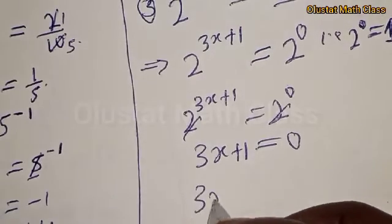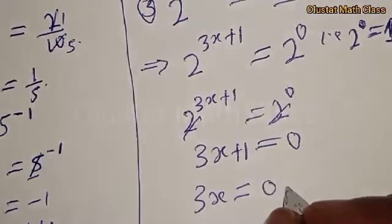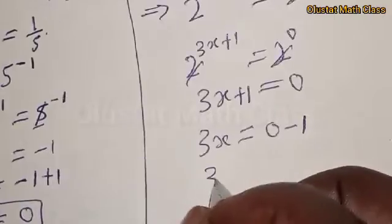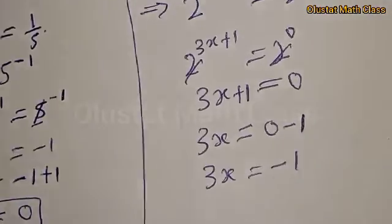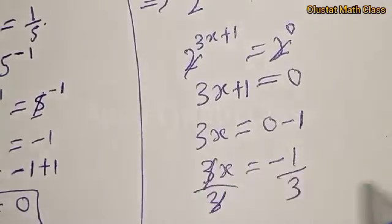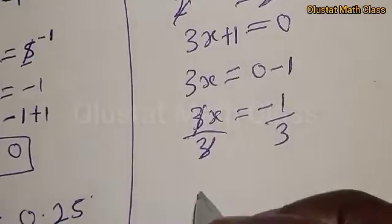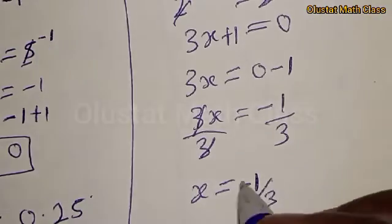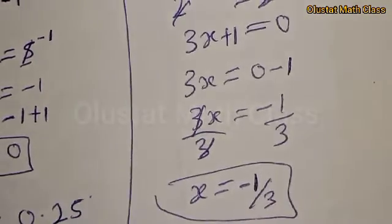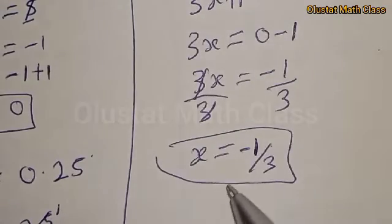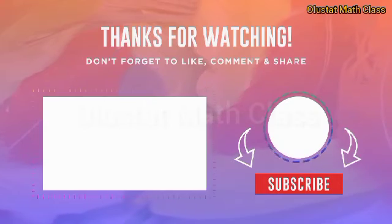We have 3x plus 1 equal to 0, so 3x equal to negative 1. Dividing both sides by 3, x is equal to negative 1 over 3. That is the answer. We can see that it's very simple. If you have enjoyed the class, please don't forget to like, share, comment, and subscribe. That is how to solve the exponential equation in a simpler way. Thank you.